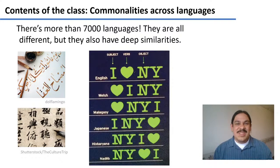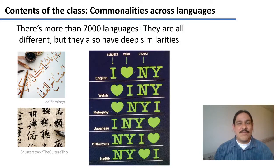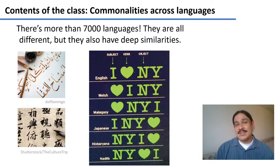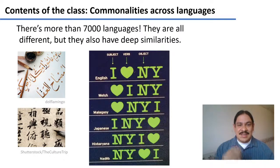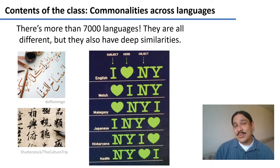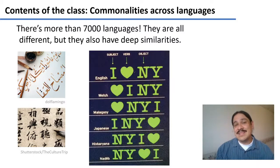There are more than 7,000 languages in the world and they look very different. However, there are deep similarities running through them. For example, with words like subject, verbs, and objects, there are only really a few ways that you can arrange them, and languages in the world are arranged in only these six ways.